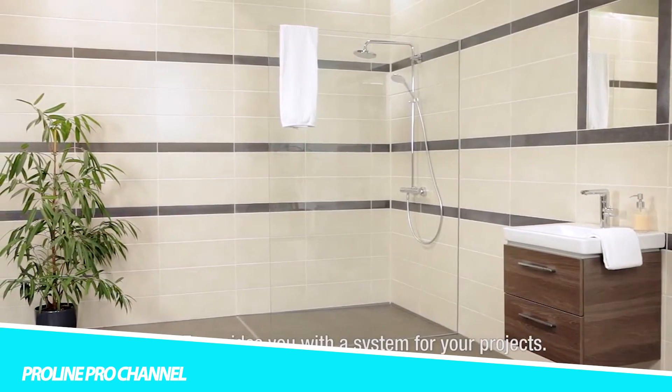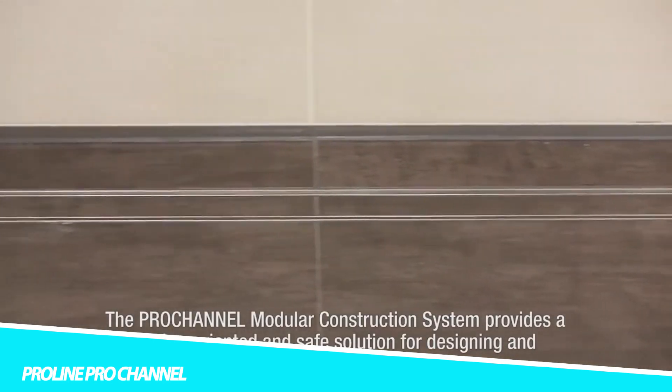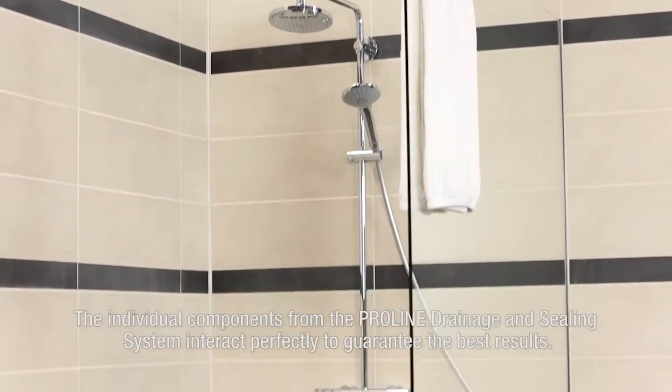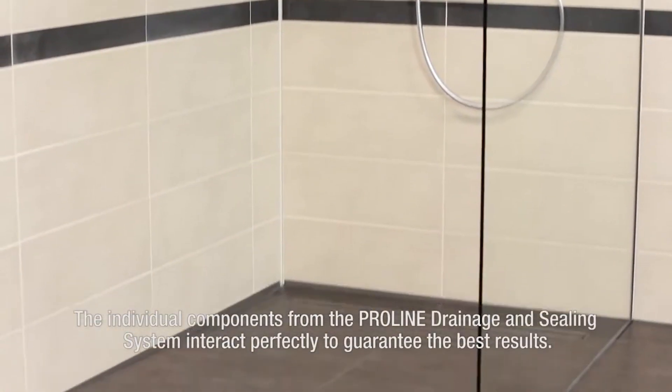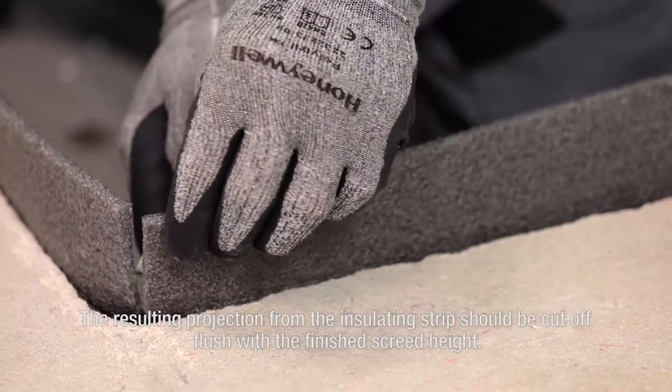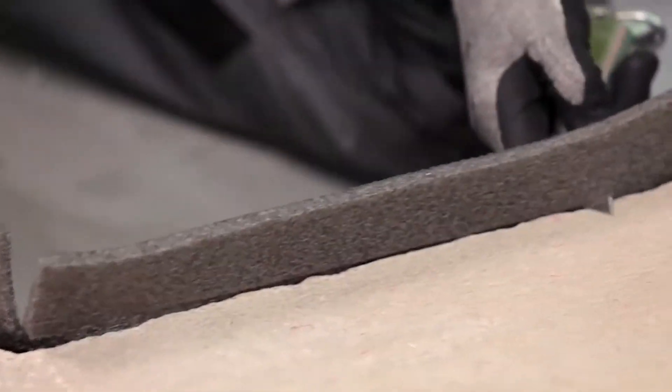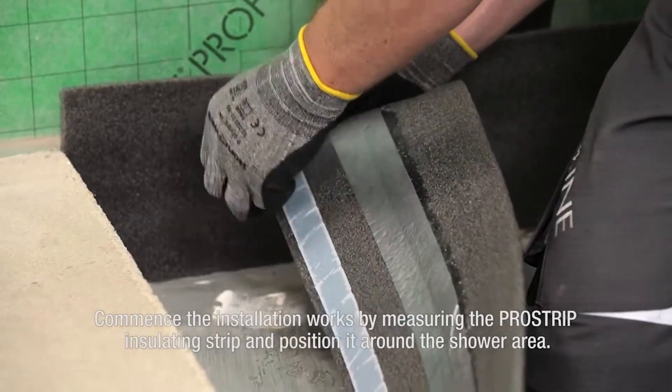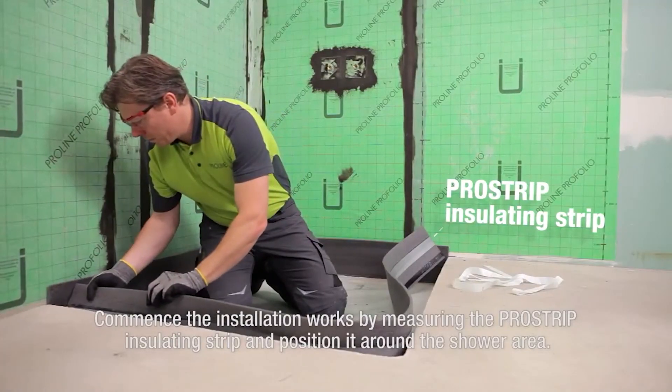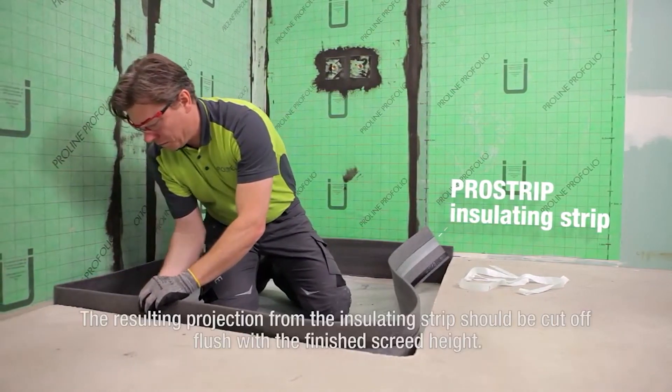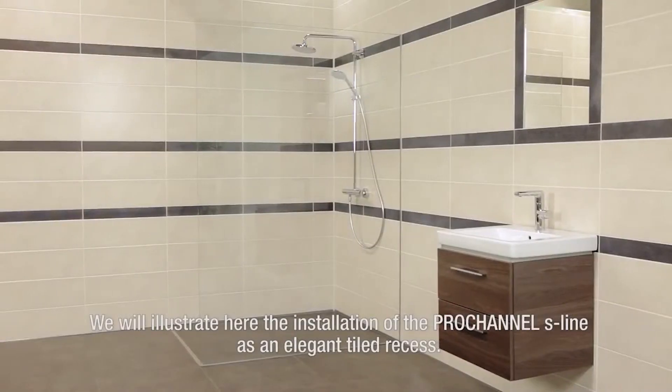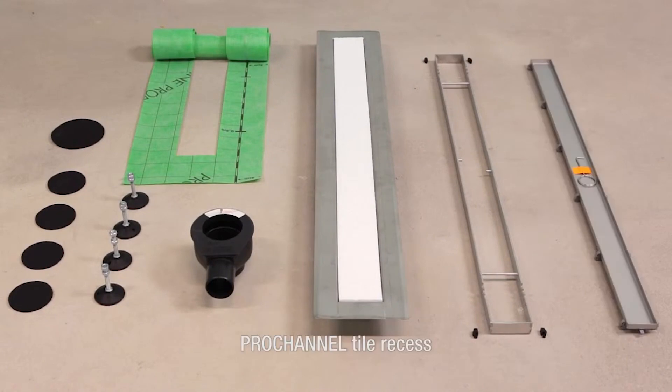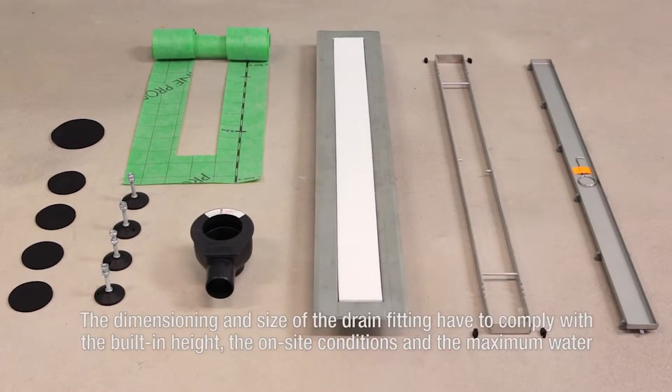ProLine ProChannel is a type of construction technology used for the drainage systems in buildings, parking lots, and other outdoor areas. It is a modular channel drainage system that features a range of innovative design features, making it a versatile and durable solution for managing stormwater runoff. The ProLine ProChannel system is designed with a variety of components that can be easily customized and configured to meet the specific needs of different construction projects. The system includes precast concrete channels, grates, catch basins, and end caps, which can be combined in a variety of configurations to create a complete drainage solution.